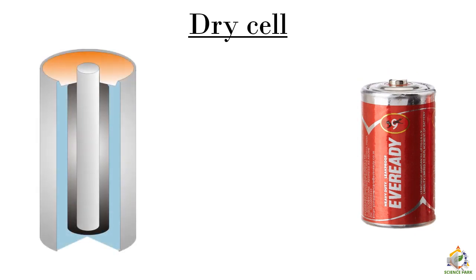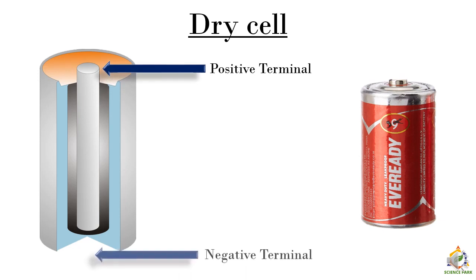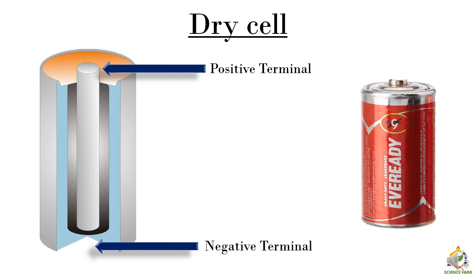Let's see what is inside a dry cell. Before that there are two terminals, one is positive and another is negative. The terminal which is above is the positive terminal and which is below is negative terminal.